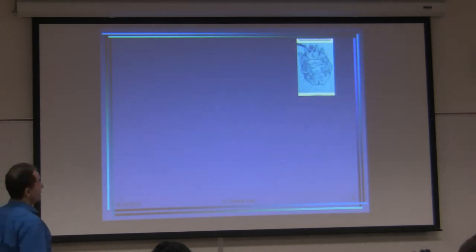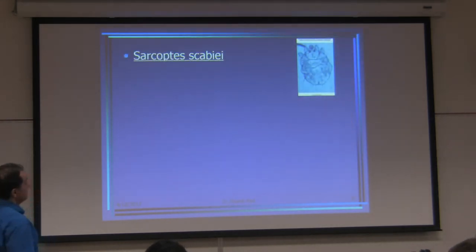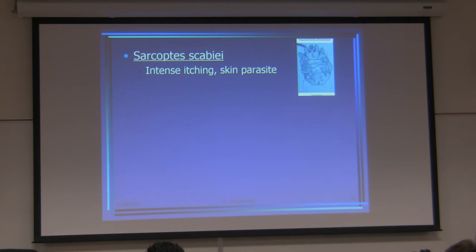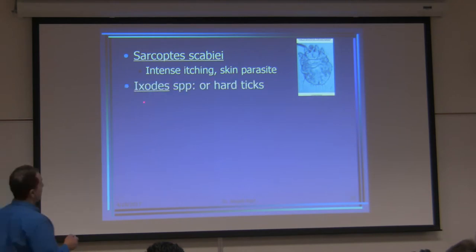Here is a mite. I'm putting up an image on the sarcoptic scabies. They have a figure of so-and-so has scabies. This is the organism right here. It's a very small organism. They cause scabies — intense itching — skin parasites, of course.